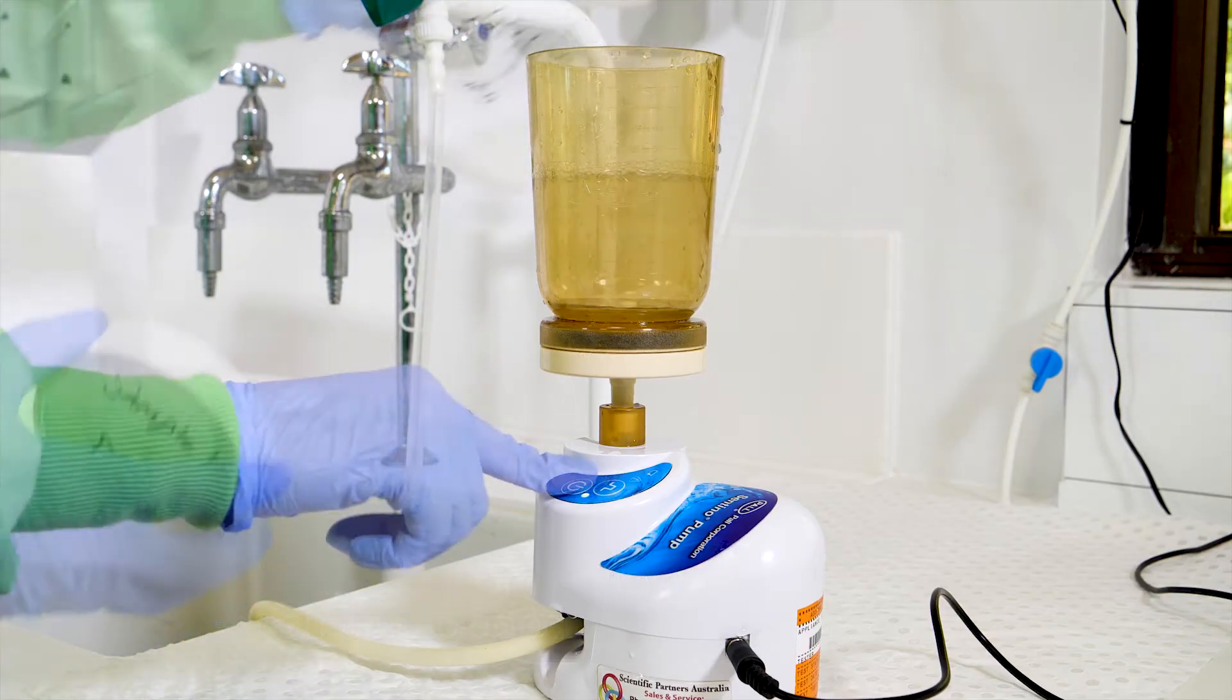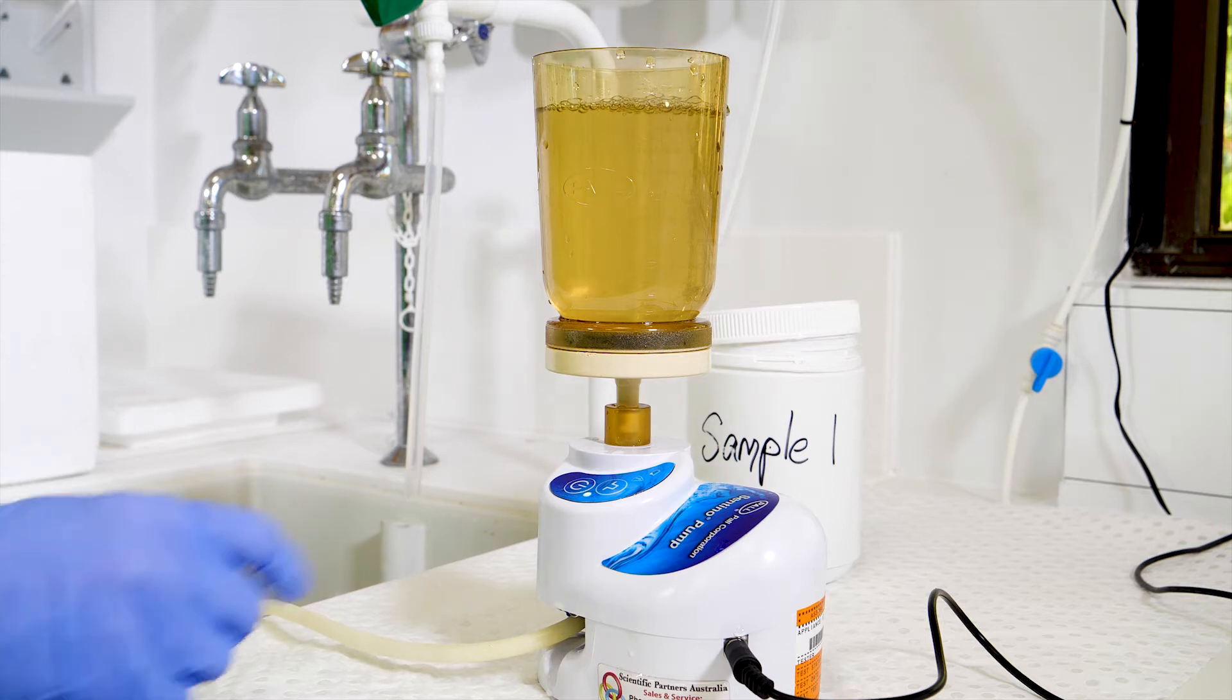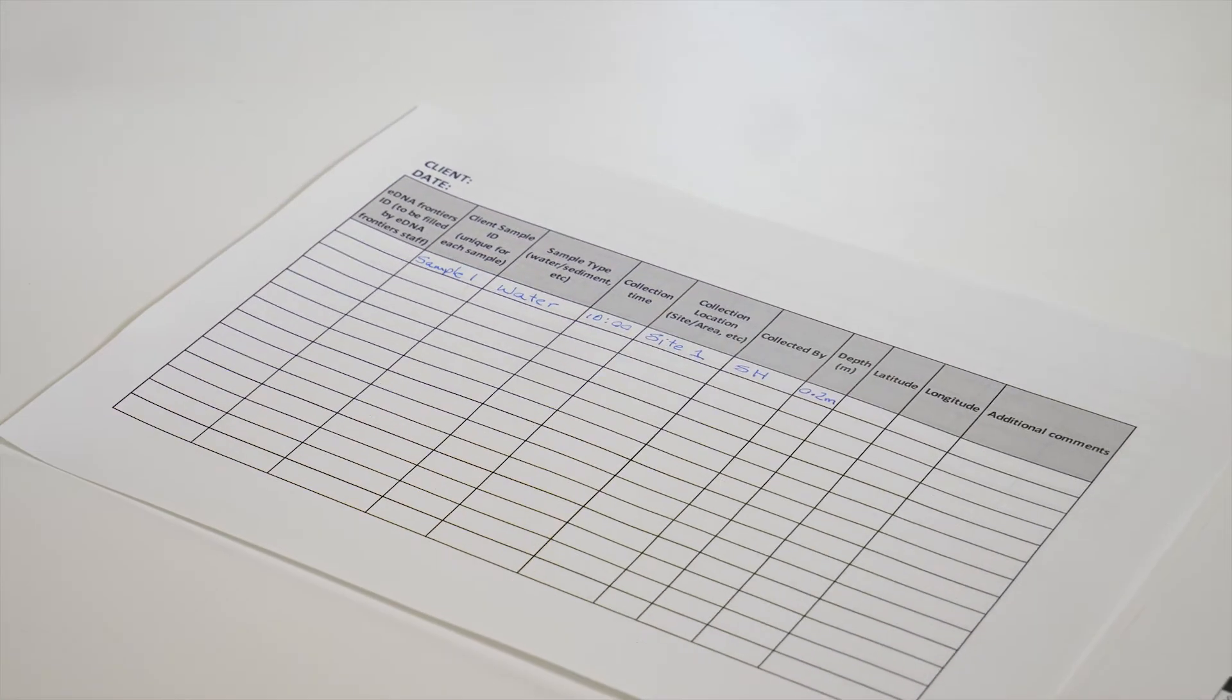When the water volume completes filtration, stop the pump. If the water is very turbid and the filtration of a single sample takes longer than 30 minutes, the membrane may be clogged. Stop the pump and record the volume of water filtered on the sample sheet. You may discard the remaining water sample.